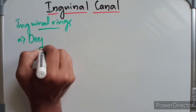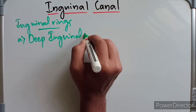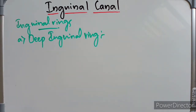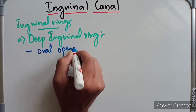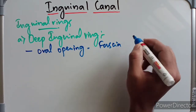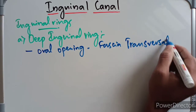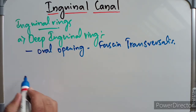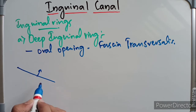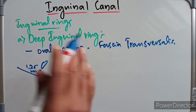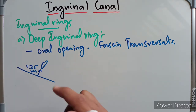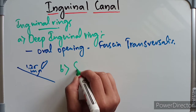The deep inguinal ring is an oval opening in the fascia transversalis. It lies about 1.25 centimeters above the mid-inguinal point. From its margins, the fascia transversalis is prolonged into the canal like a sleeve, forming the internal spermatic fascia.